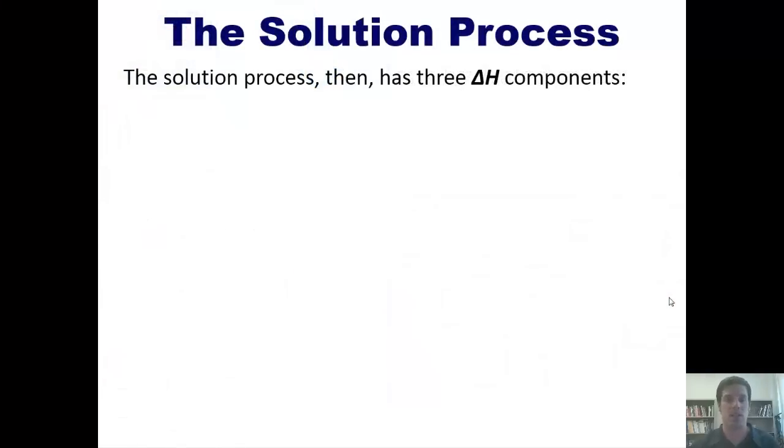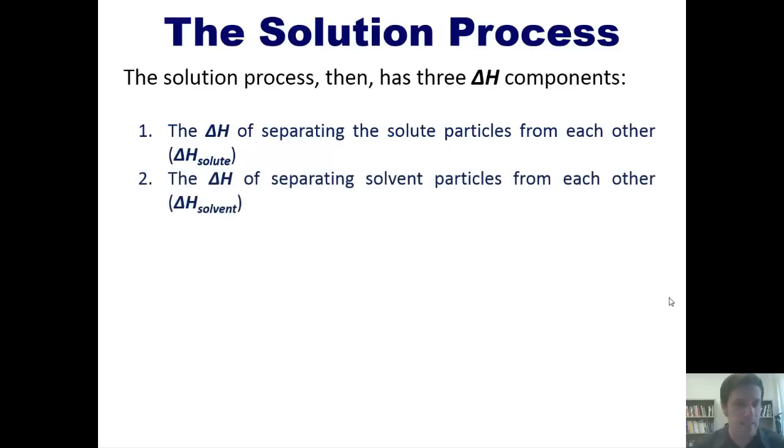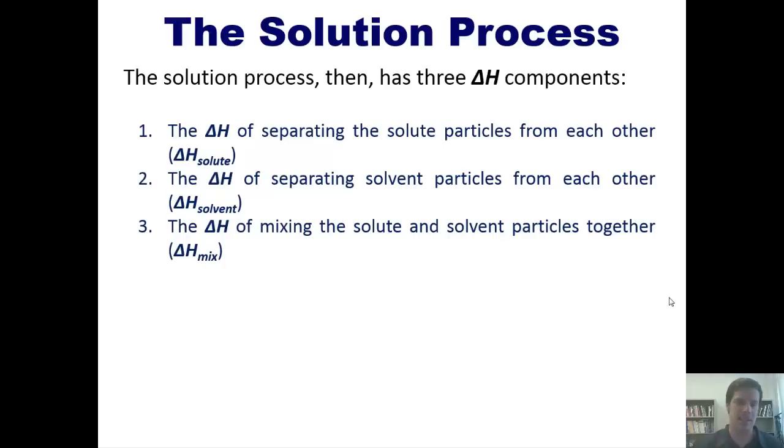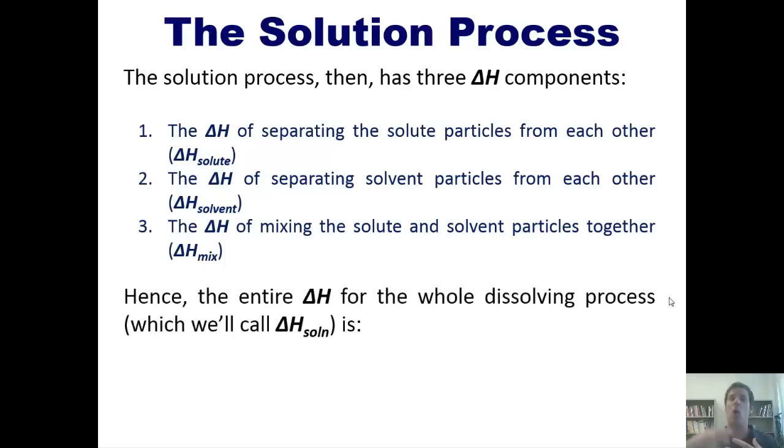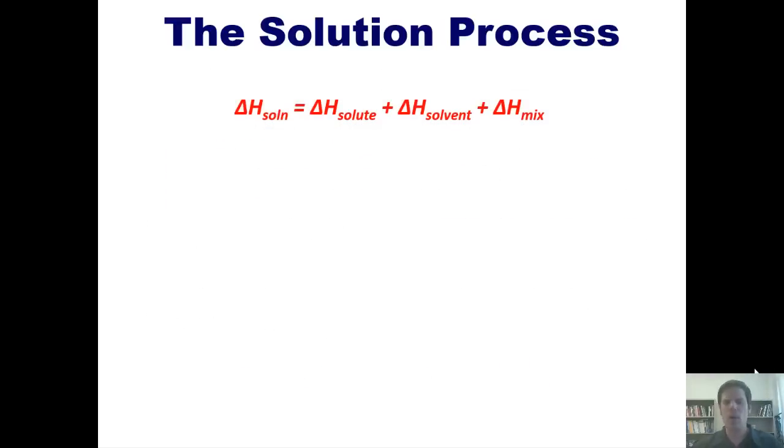We can say, then, that the solution process has three delta H or enthalpy components. First, the delta H of separating apart the solute molecules from each other, which we call delta H solute. Second, the delta H of separating the solvent molecules from each other, which we'll call delta H solvent. And third, the delta H of mixing the solute and solvent particles back together again. Hence, the entire delta H for the whole process of dissolving a solute in a solvent, which we can call delta H soln, which is an abbreviation for solution, can be depicted using the following equation. Delta H of solution is equal to delta H of solute plus delta H of solvent plus delta H mix. I'll go ahead and take this equation and throw it up top. I want you to take a look at this equation and make sure you understand what each of the components means.